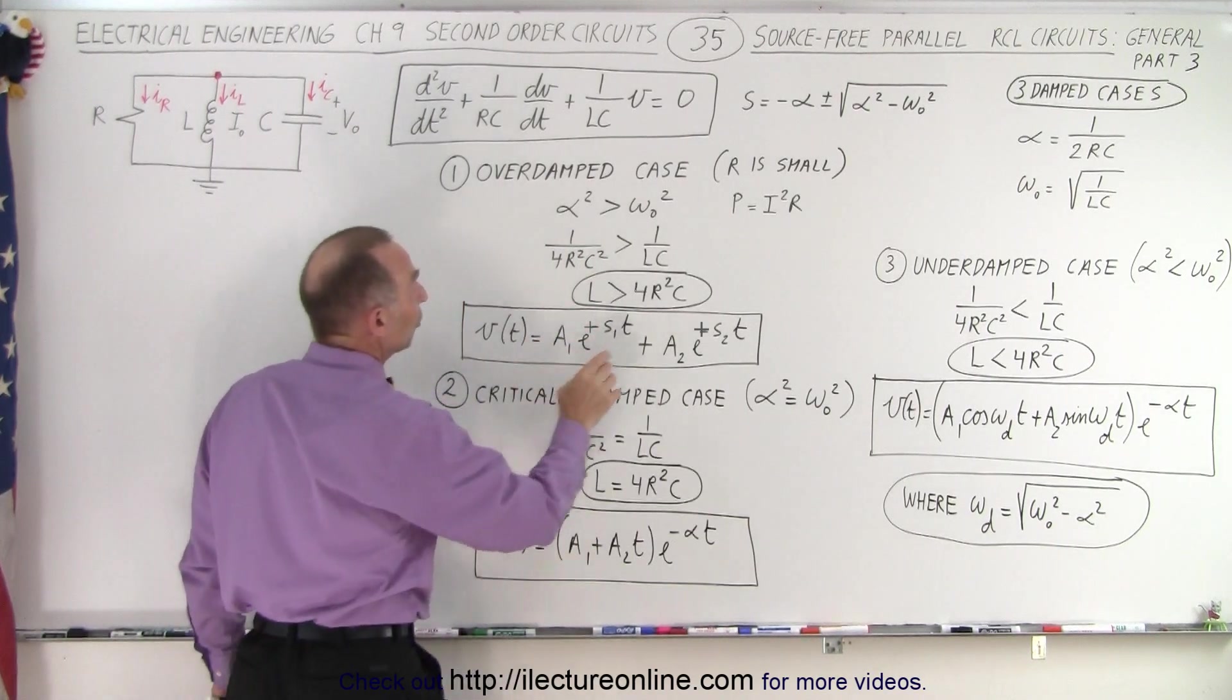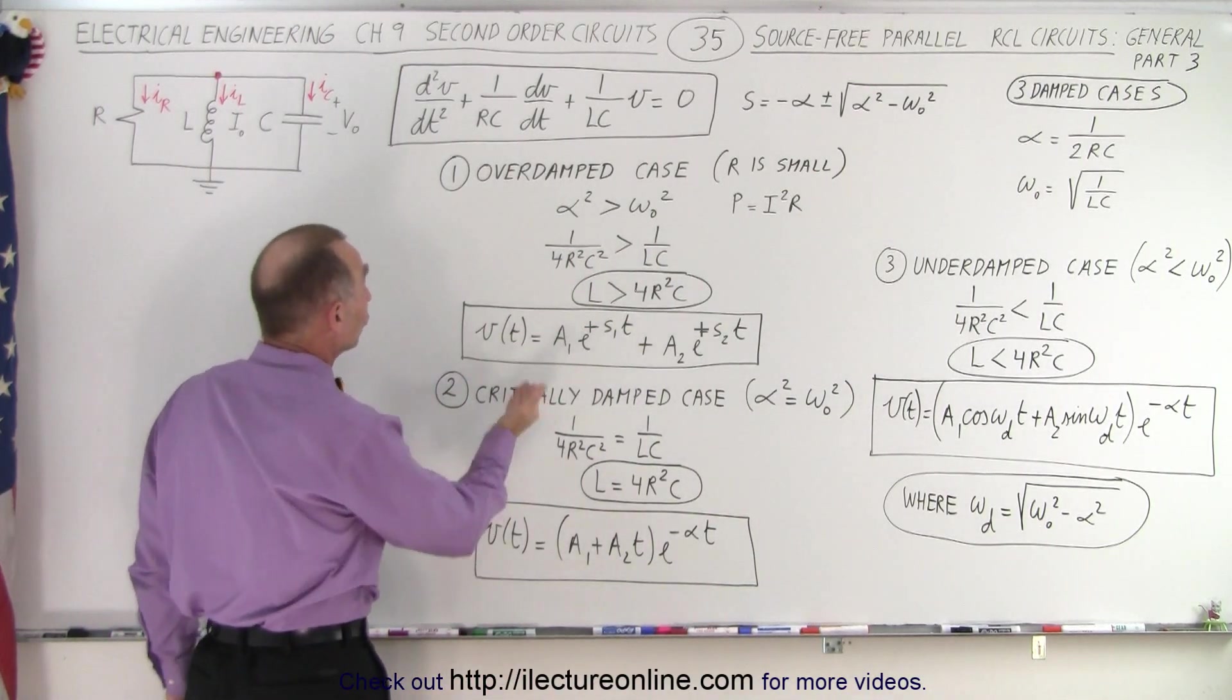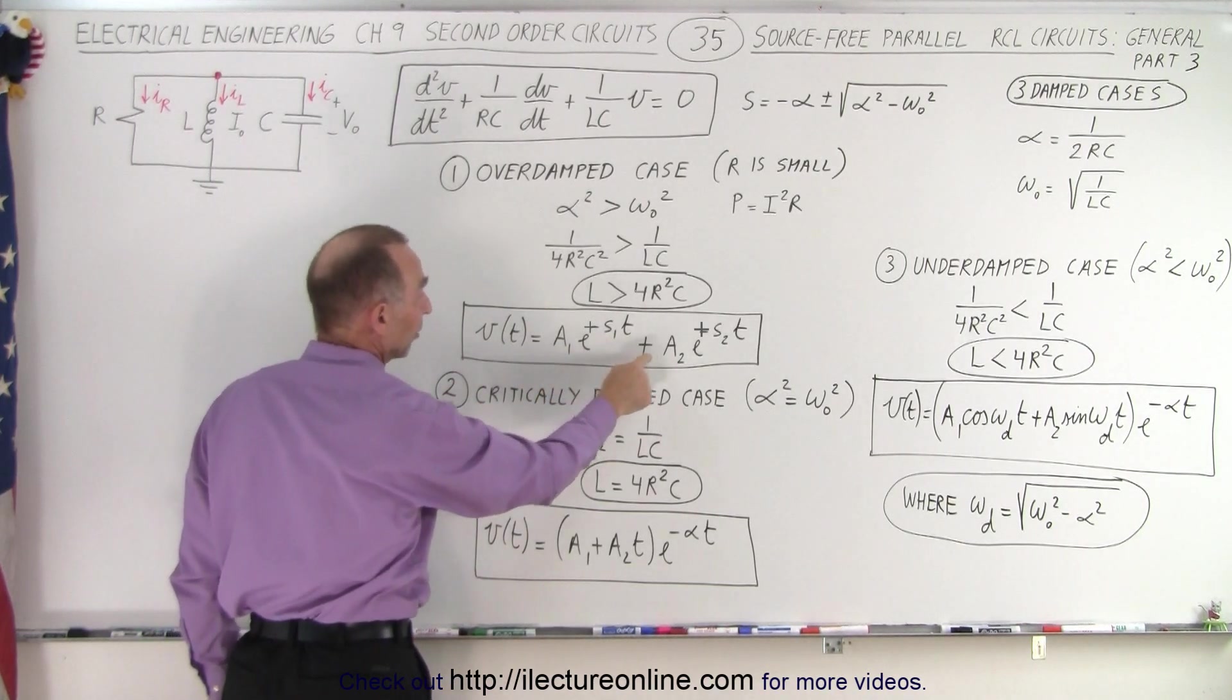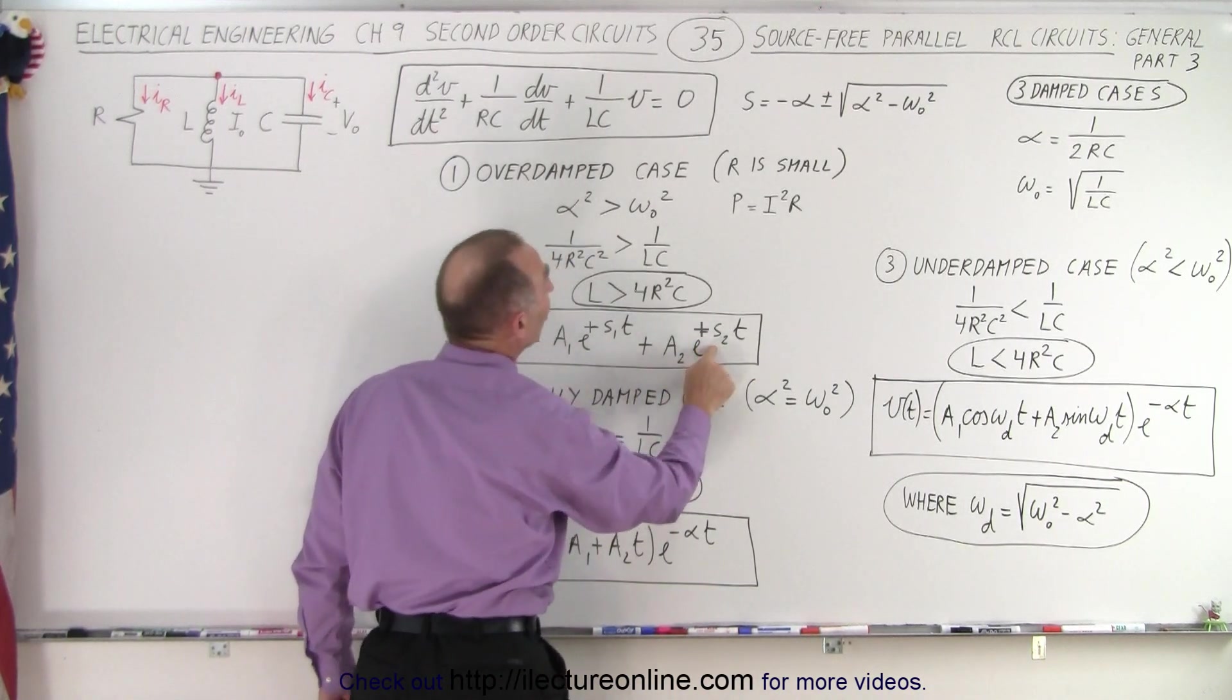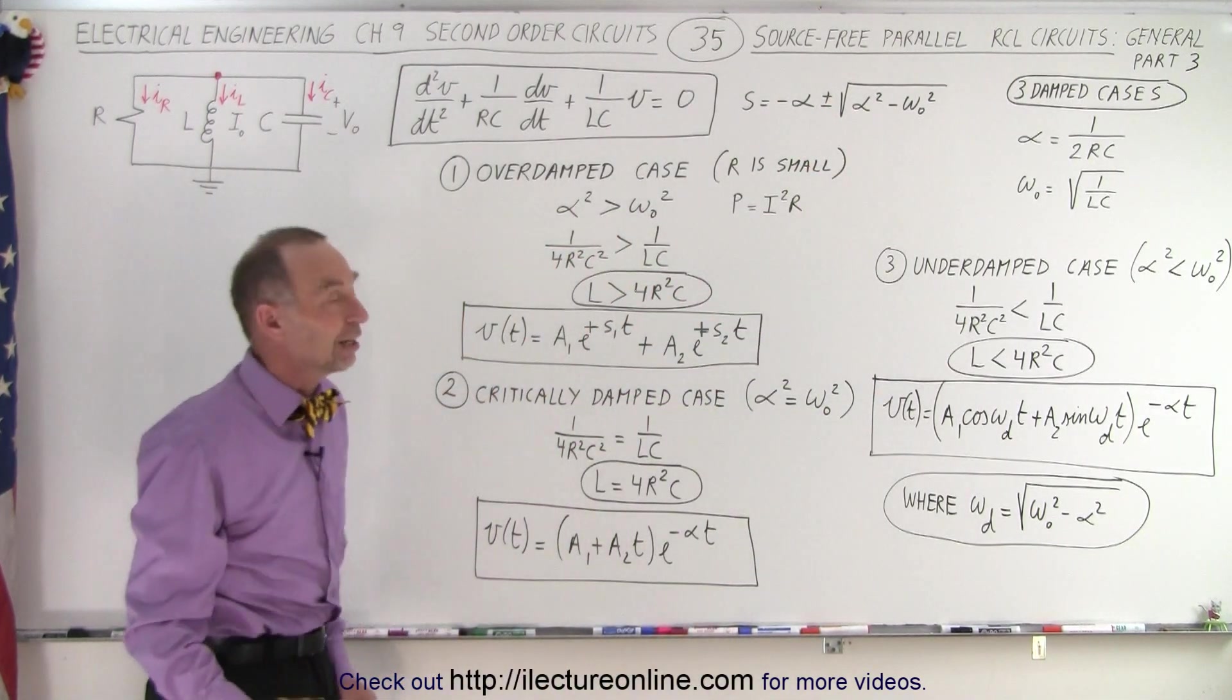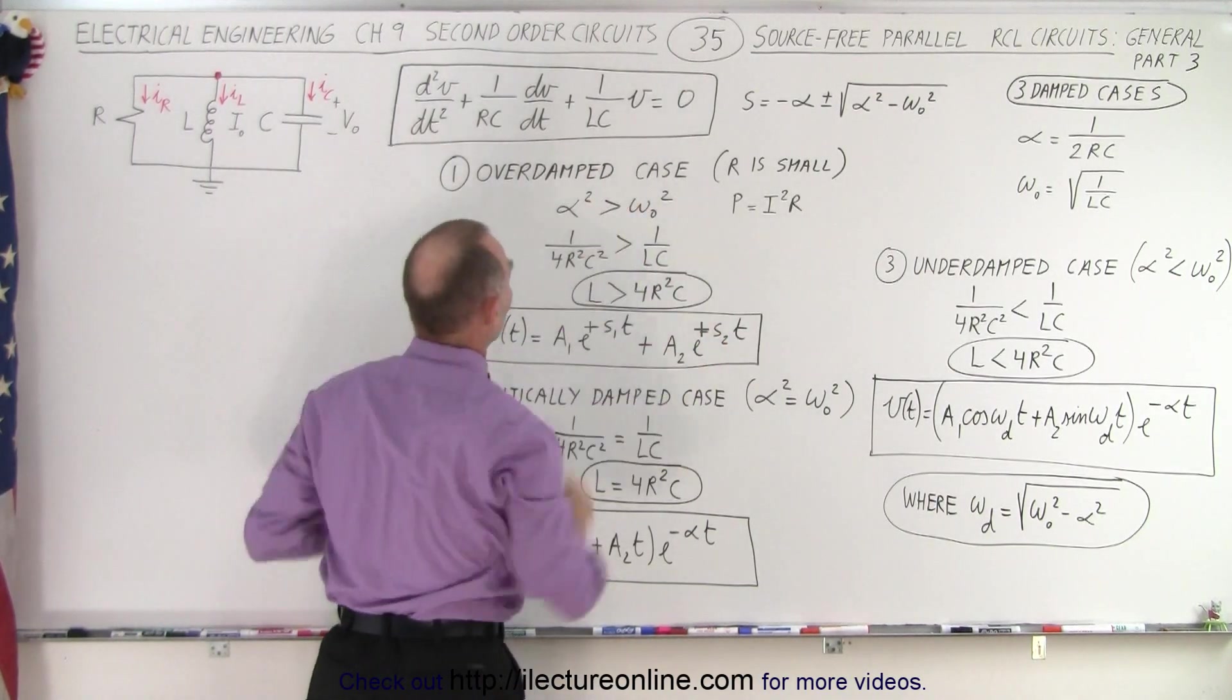So if we have a situation where this is a positive number underneath the radical, then the general solution to the differential equation is that the voltage as a function of time is the first constant times e to the plus S1t plus the second constant e to the plus S2t. S1 and S2 are simply the two S's that come out of this equation right here, because in one case we have a positive, and in another case we have a negative radical of alpha squared minus omega sub-naught squared. So this is the general solution to this differential equation.